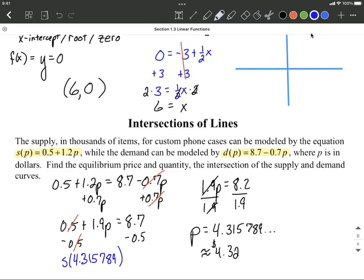So plugging that in, that's going to be 0.5 plus 1.2 times that 4.315789. And I got that to come out to be right around, I mean like 5.6789468.